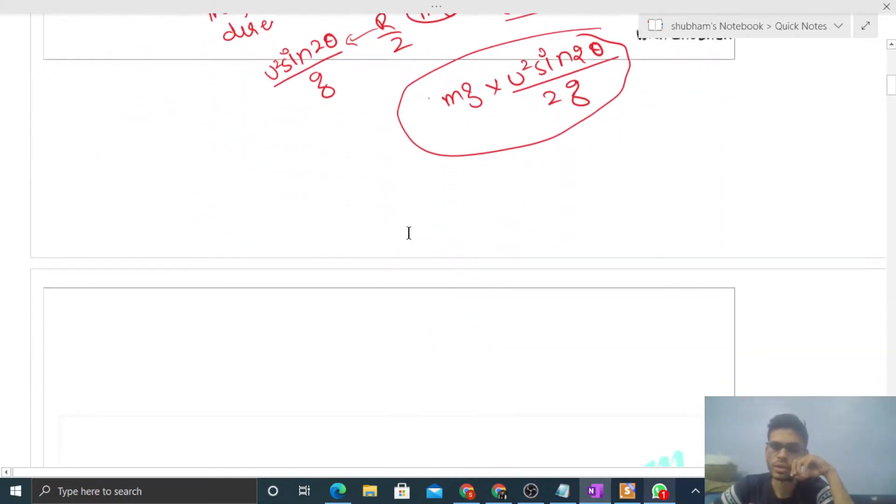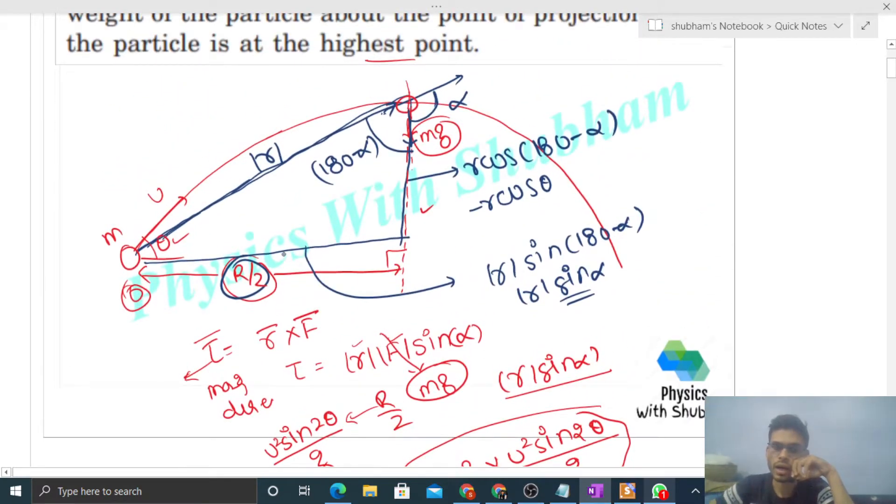For direction, we use r × F. Point your right-hand fingers along r and curl them toward F. The torque direction is perpendicular to the page, going backward (into the page). In notation, this is represented by a cross (⊗).